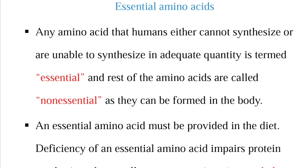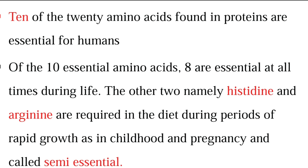Coming to essential amino acids — these are the amino acids which our body cannot synthesize, or if synthesized, not in adequate quantities. Those are called essential amino acids. They are required for the synthesis of proteins, but since they cannot be synthesized in our body, they should be supplied in the diet. The amino acids which are synthesized in our body are called non-essential amino acids. Deficiency of essential amino acids leads to negative nitrogen balance. Out of 20 amino acids in any protein, 10 amino acids are essential, and out of those 10, again, 8 are essential and 2 are semi-essential.